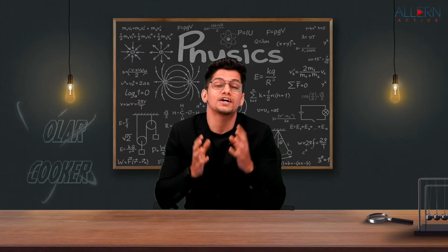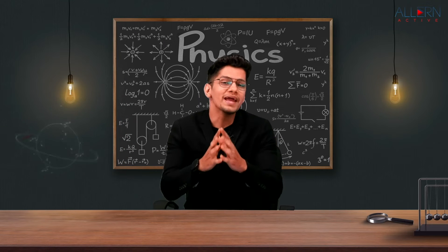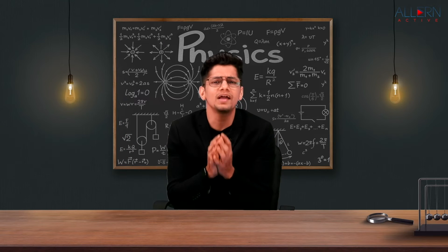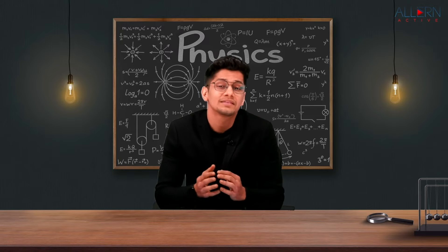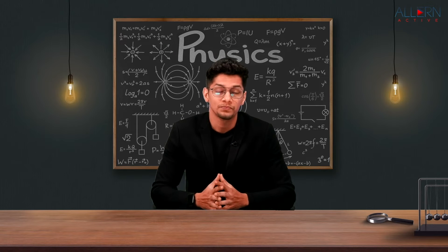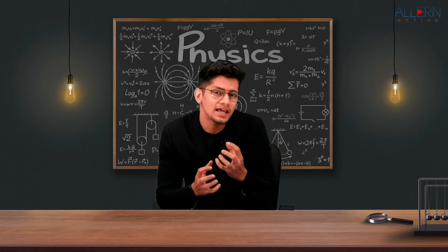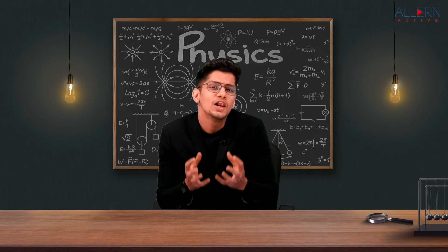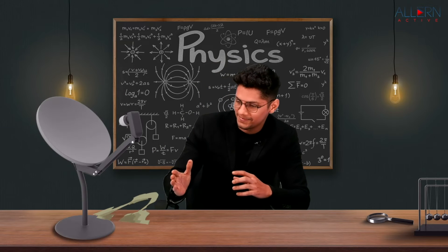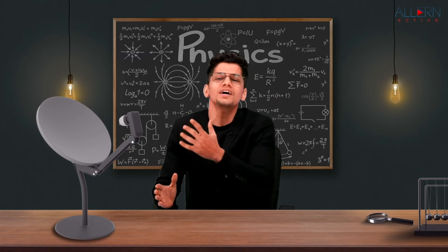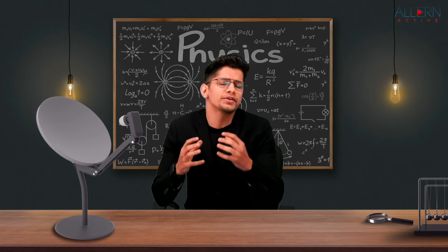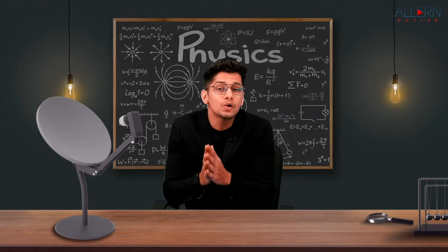To make a solar cooker, what we require initially is a shape that looks like a concave mirror. We know that a TV dish antenna looks like a concave mirror. So here we have a TV dish antenna, and we are going to make a solar cooker using this dish antenna.